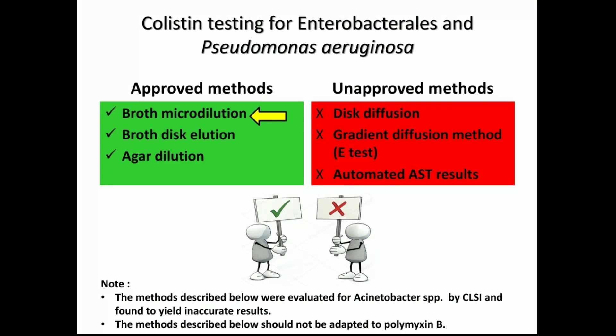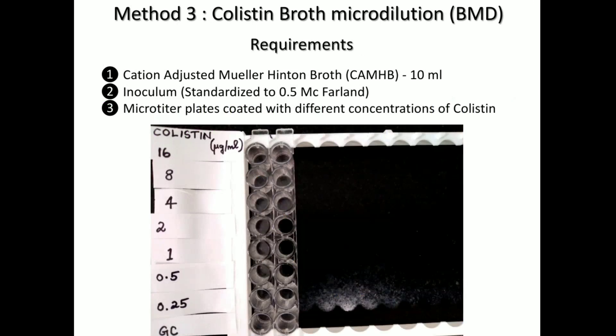The third method approved for colistin testing is the broth microdilution method. The requirements for this method are cation-adjusted Mueller-Hinton broth, 10 ml taken in a tube.